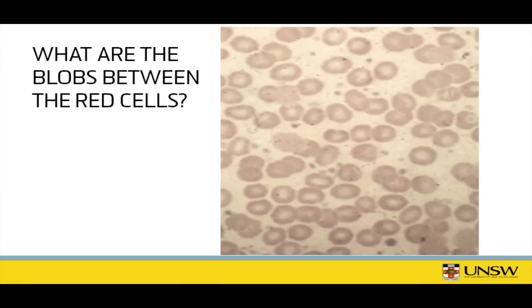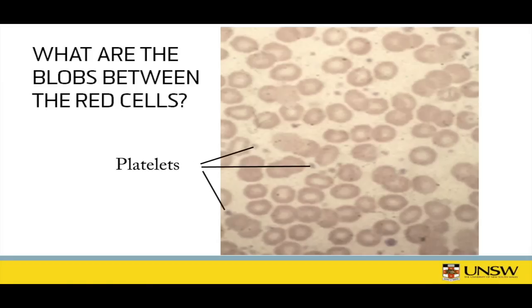You can see little blobs between the red cells here. This photo is actually from a person with an increased number of these so they're easier to see. Does anyone know what these are? Platelets. And what's the role of platelets? Clotting — they collaborate with the clotting factors in plugging up holes.